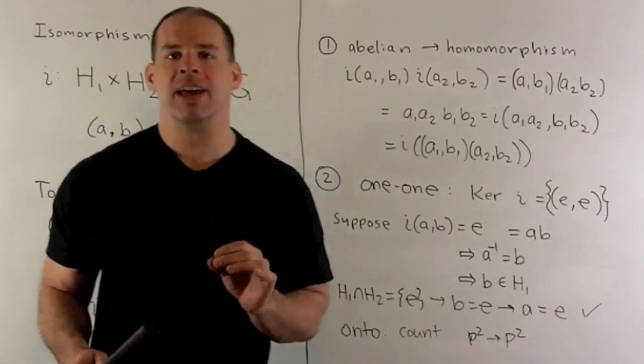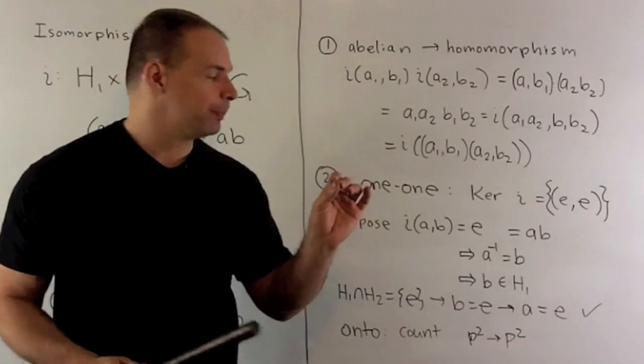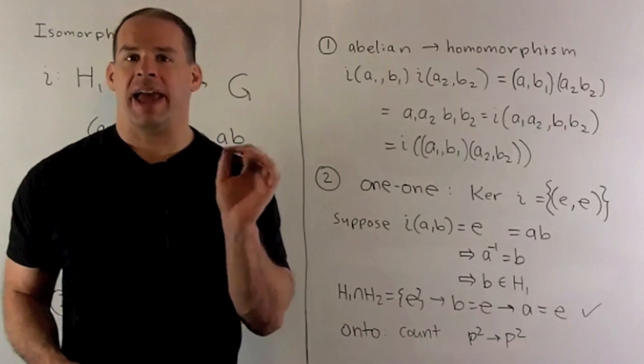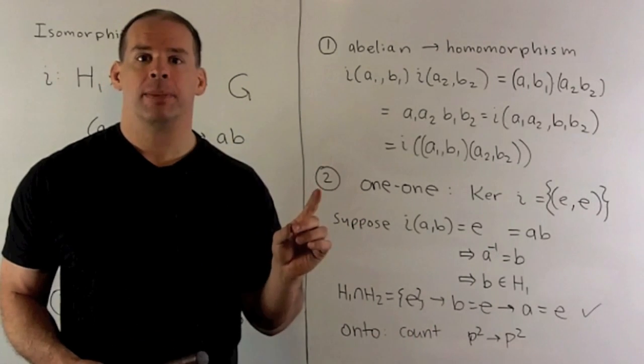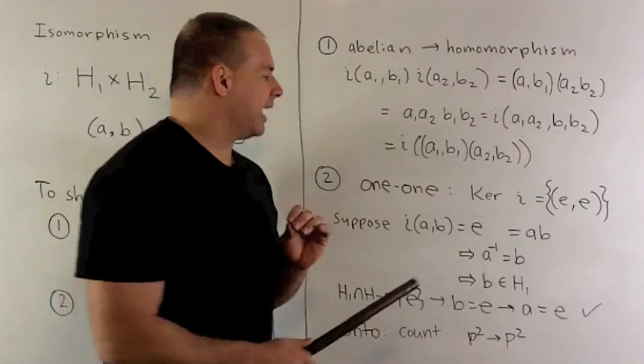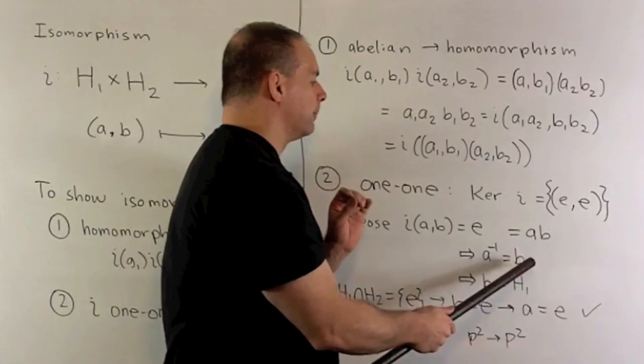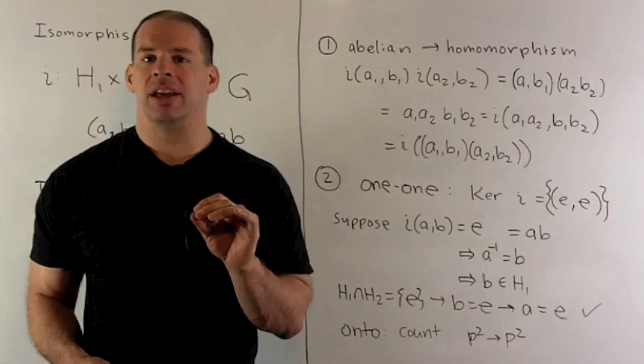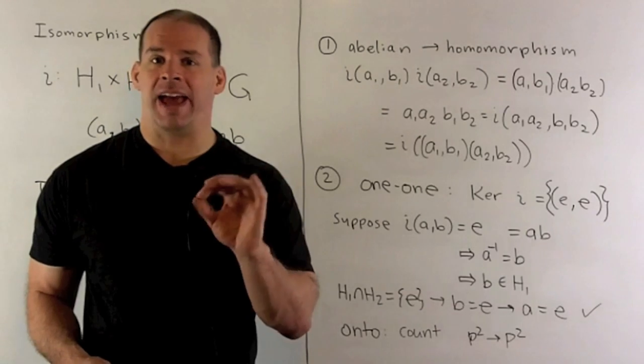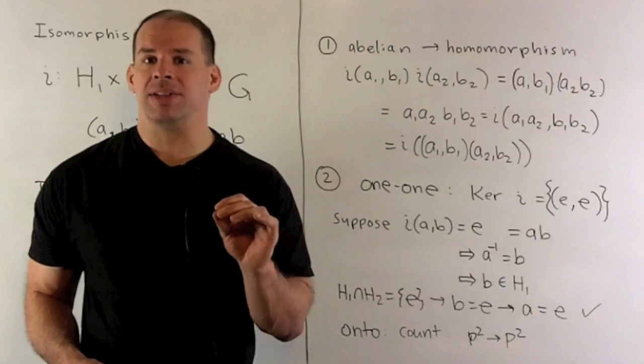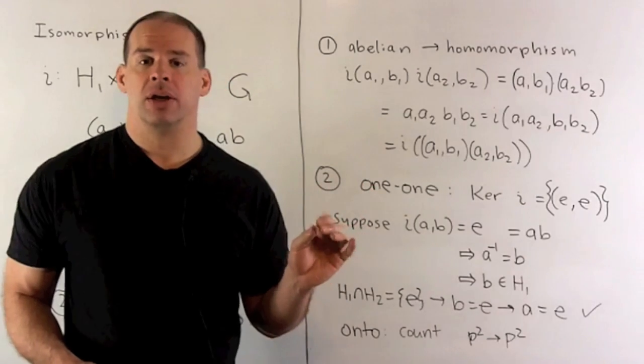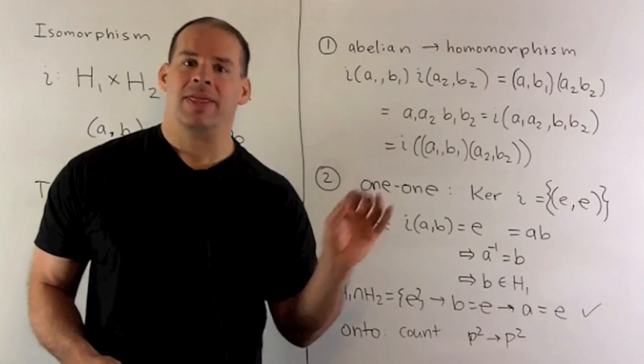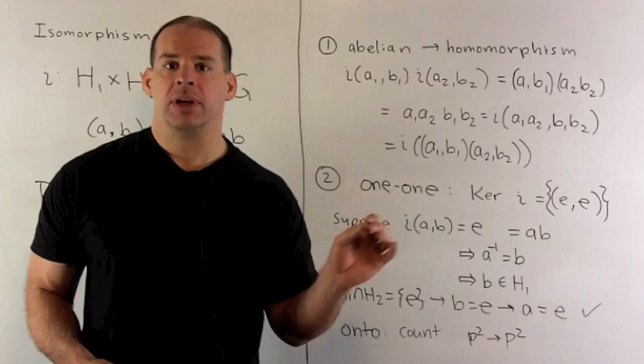So I'm going to suppose we have (a, b) going to e. That means a times b is equal to e, which also means that a inverse is equal to b. Now since H1 is closed under inverse and a is in H1, that means b is also in H1. So b is in the intersection of H1 and H2. Now that has to be the identity.